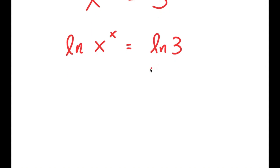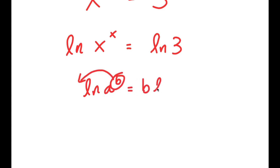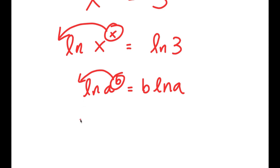An important property of logarithms is that if I have something in the form ln of a to the power of b, I can move this exponent b to the front, so this turns into b times ln a. So in this case, I have ln of x to the power of x, and I can move x to the front, so I get x times ln x is equal to ln 3.